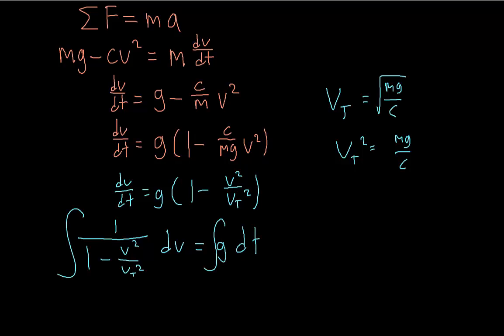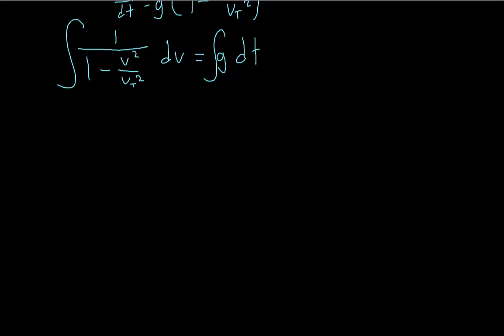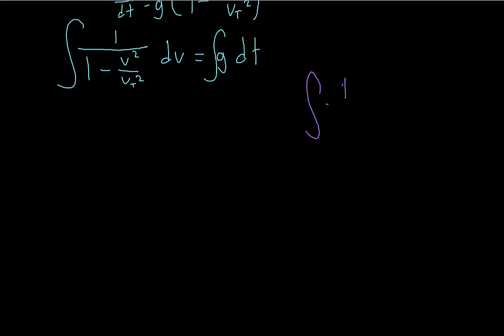So this might look tricky to integrate, but it turns out, you know, if you didn't know, the integral of this form, one over one minus x squared, if you integrate this, this is just the inverse hyperbolic tangent function. So integrating this actually turns out to be quite simple.